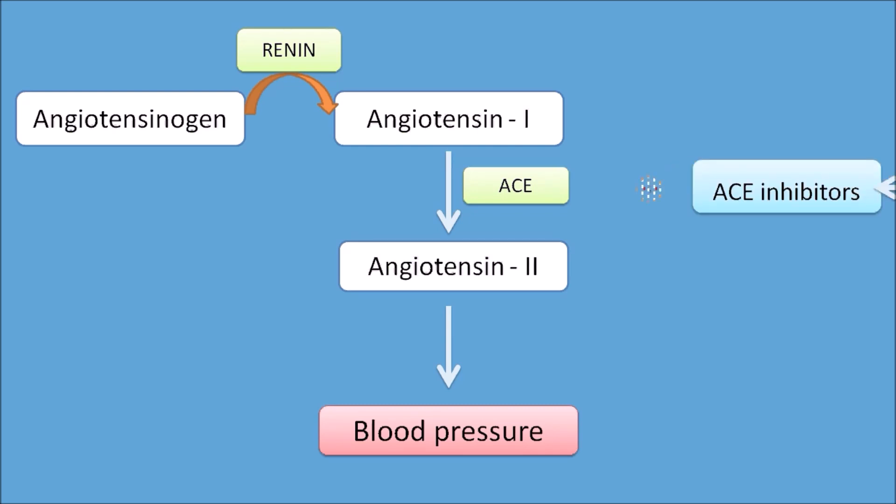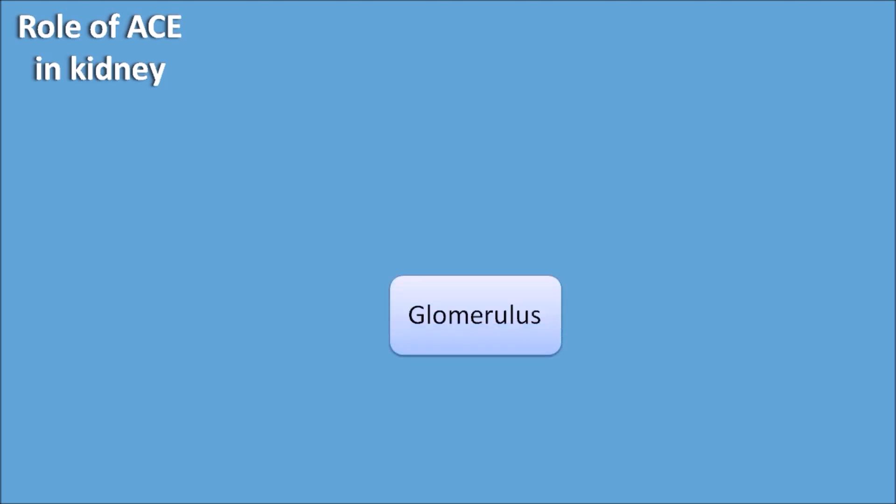Angiotensin II can increase blood pressure, so ACE inhibitors inhibit the ACE enzyme, thereby controlling blood pressure. As you can see, ACE inhibitors are not related to any potassium levels by this mechanism. So what is the role of the ACE enzyme in the kidney?